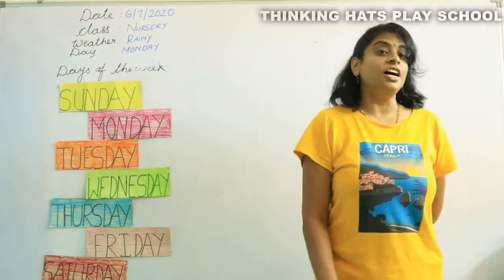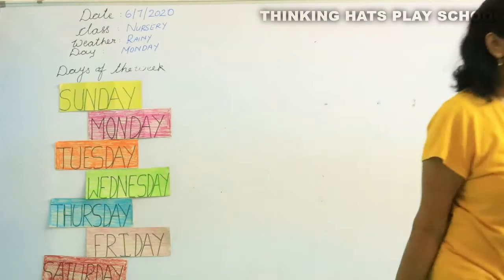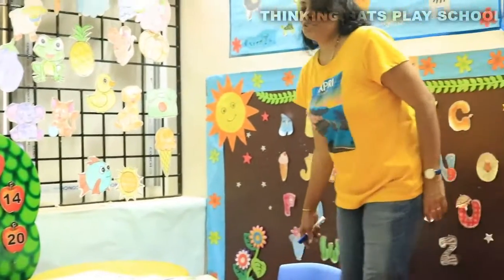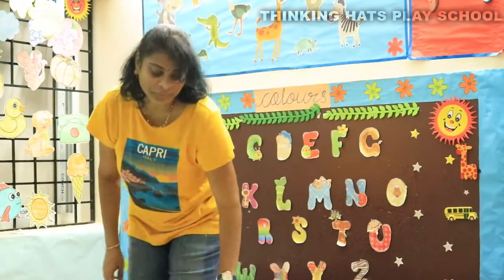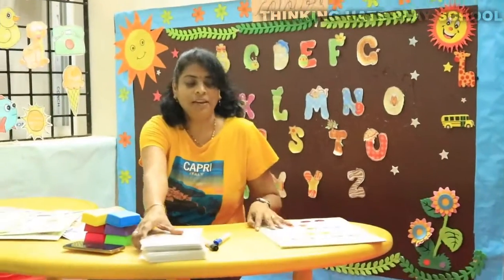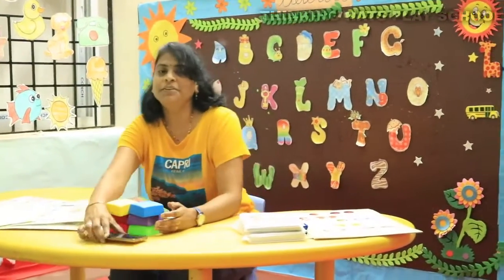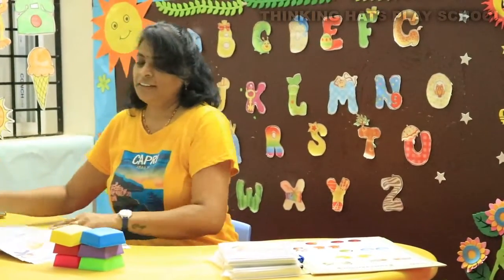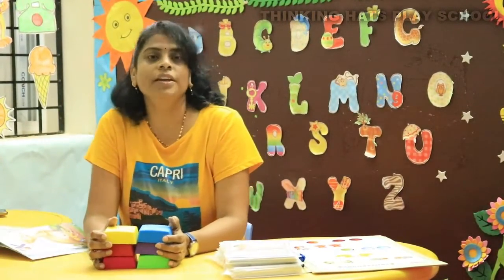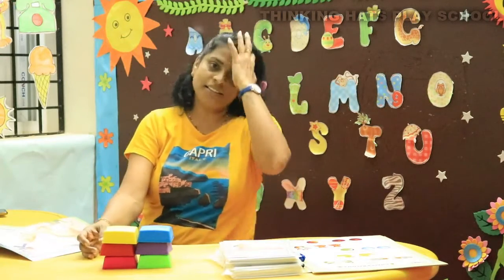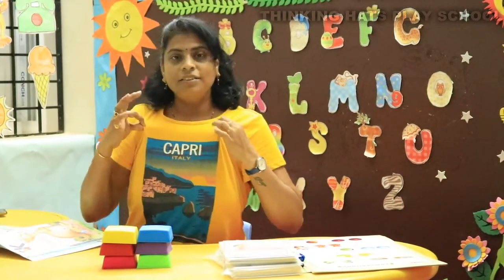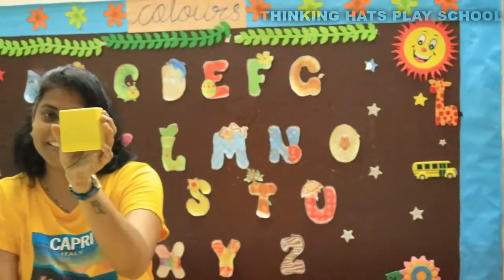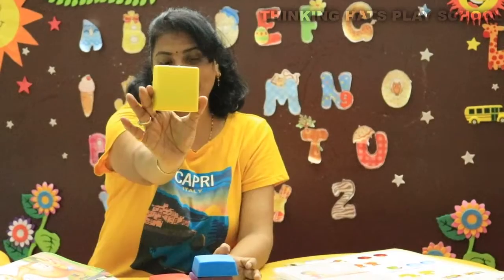Let's learn some colours today. I'll show you some coloured objects and you should tell me. Are you ready? What colour dress are you wearing today? My colour dress is yellow. There's a yellow colour here. What is this colour? This is yellow colour.